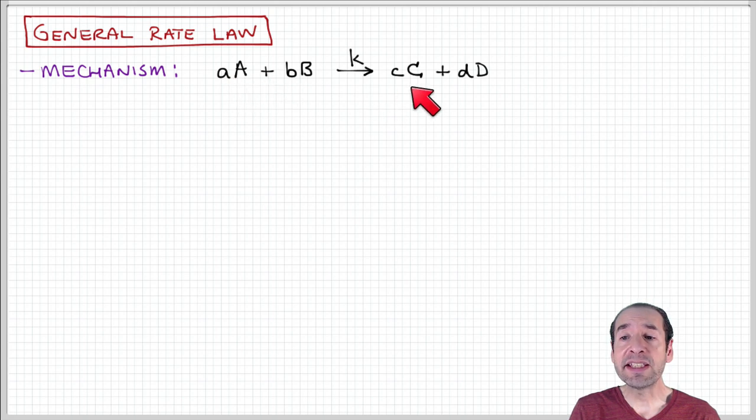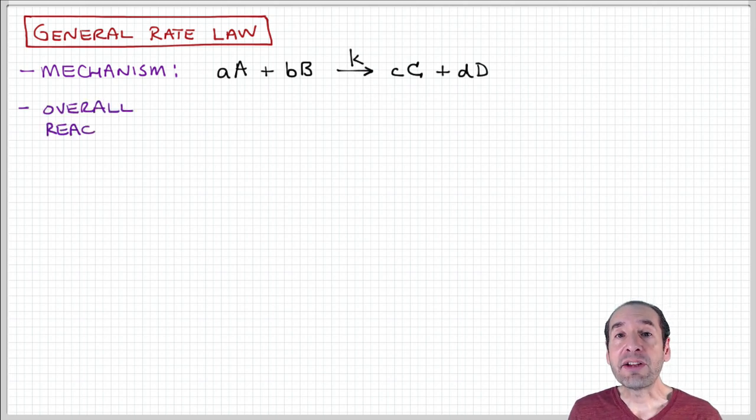The lowercase letters a, b, c, and d are the stoichiometric coefficients that express how many molecules of A, B, C, and D are involved in this reaction in order to balance the stoichiometry. This process occurs with some rate constant K, which gives us an idea about the speed of this process.